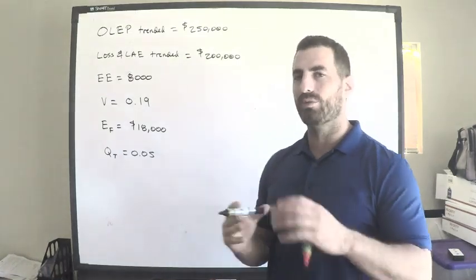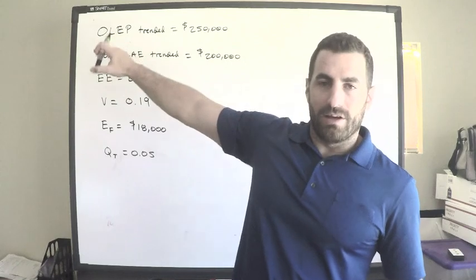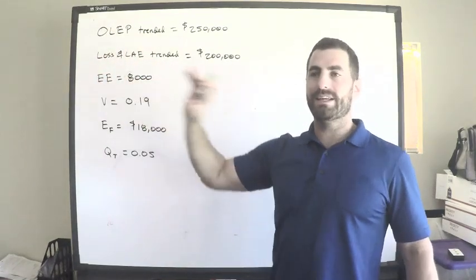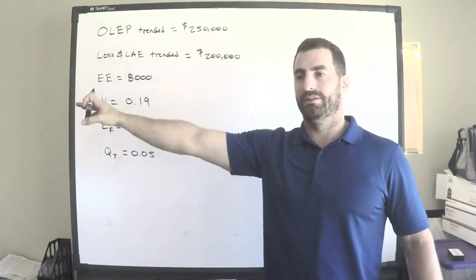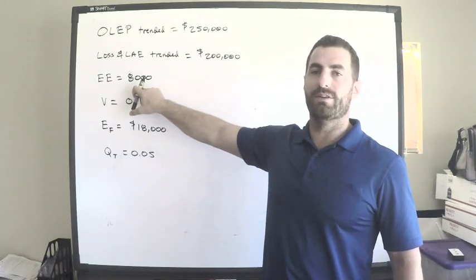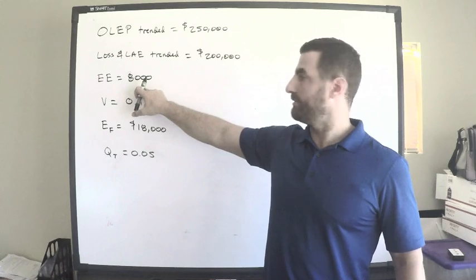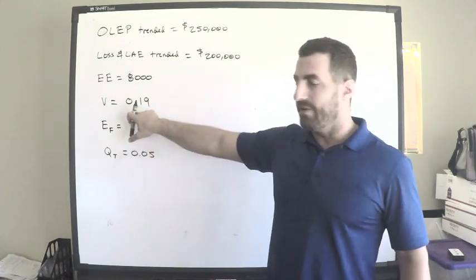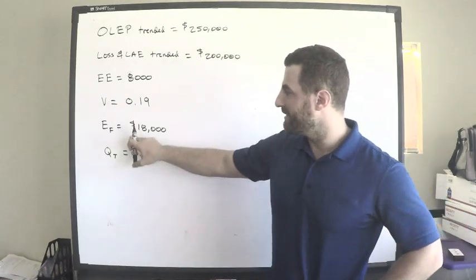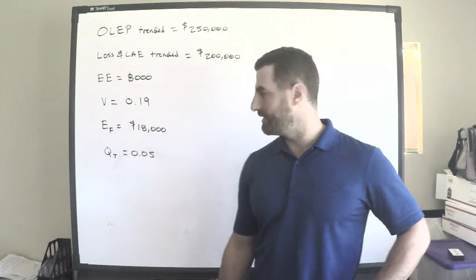We also have our losses and loss adjustment expense, and we're going to trend those forward to a future date. Earned exposures are 8,000 - notice these are not dollars, they could be dollars depending on what our exposure base is, but they may not be. The variable expense ratio is 19%, the fixed expenses are $18,000, and the target profit provision is 5%.